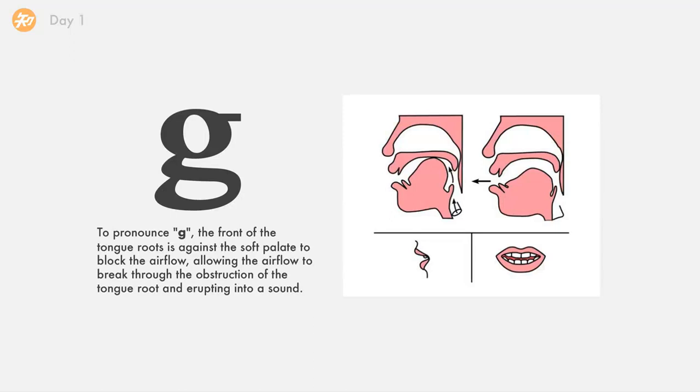The next one is g. To pronounce g, the front of the tongue root is against the soft palate to block the airflow, allowing the airflow to break through the obstruction of the tongue root and erupting into a sound.